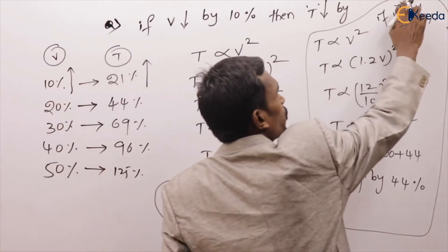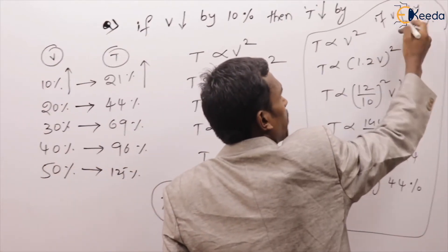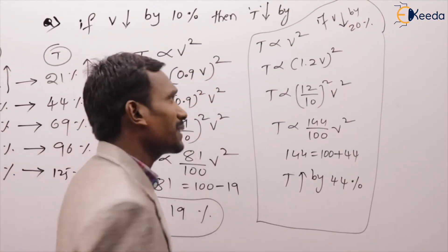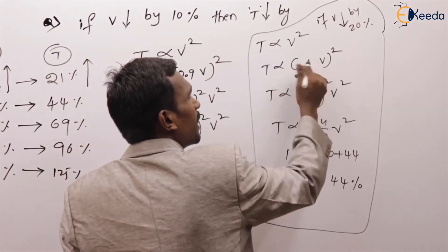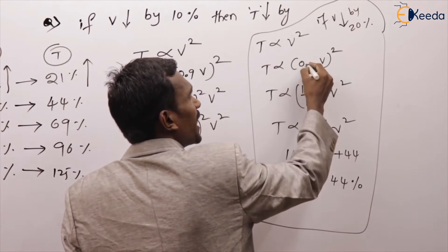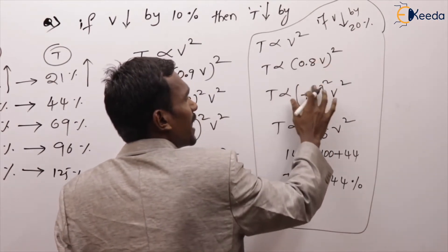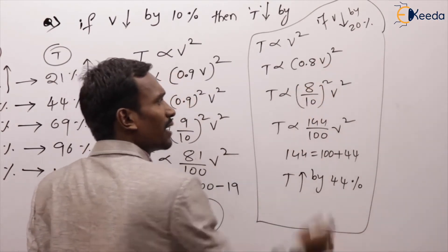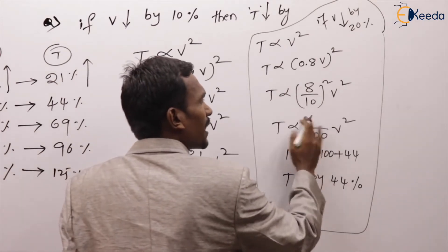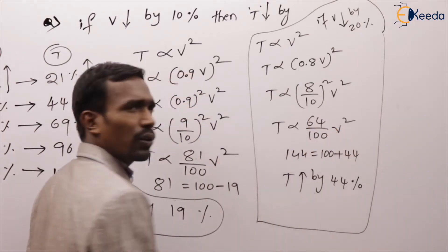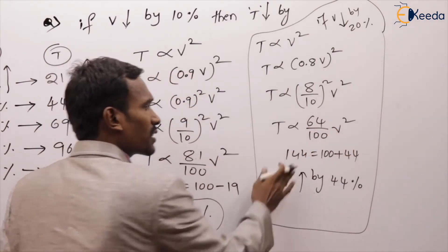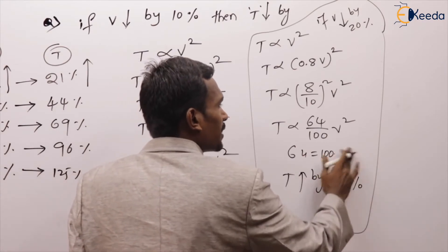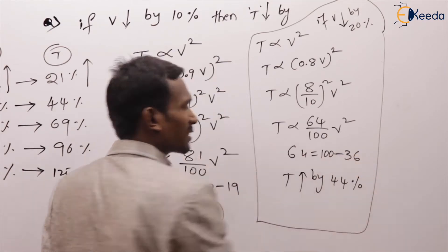If voltage reduced by 20%, then V becomes 0.8 × V. 0.8 is 8/10, so 8 squared = 64. 64 is nothing but 100 minus 36.